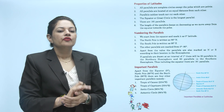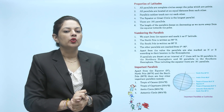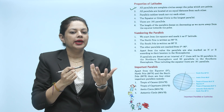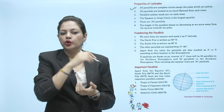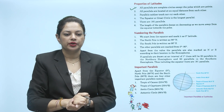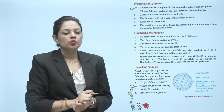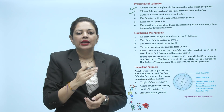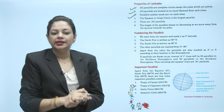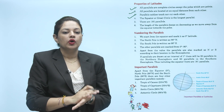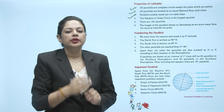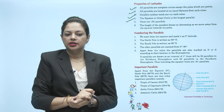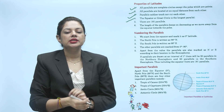Properties of latitudes: First, all parallels are complete circles except the poles, which are points. Second, all parallels are located at an equal distance from each other. Parallels neither touch nor cut each other. The equator, or great circle, is the longest parallel. जो बीच में line होती है जो अर्थ को बिलकुल दो भागों में equal divide करती है, उसको equator कहते हैं या great circle कहते हैं.